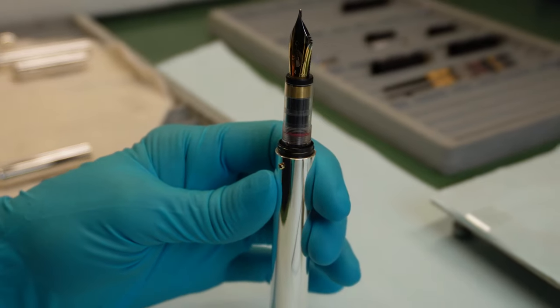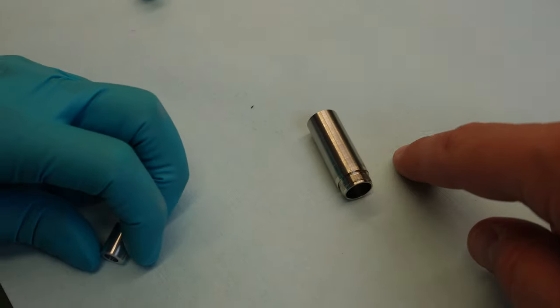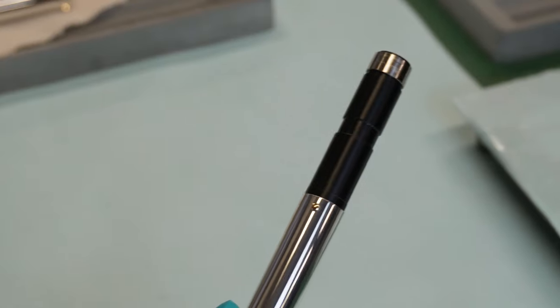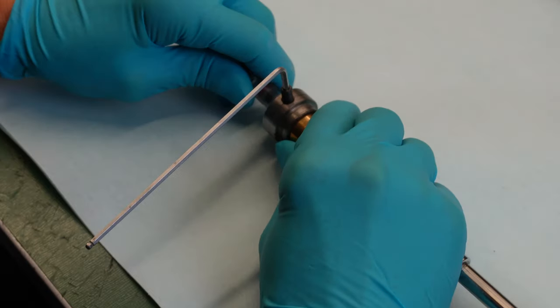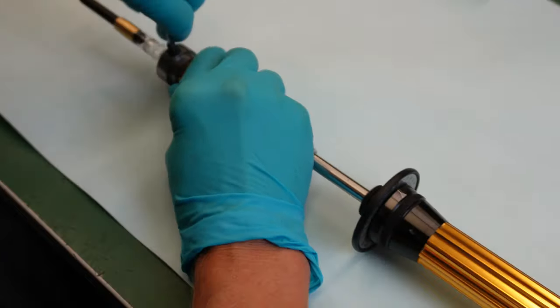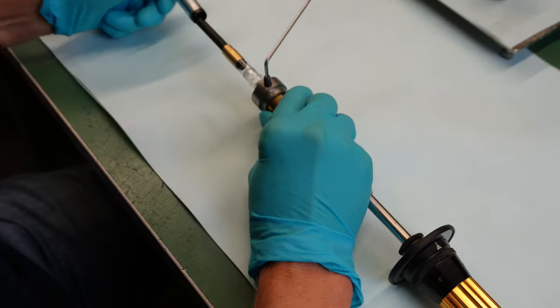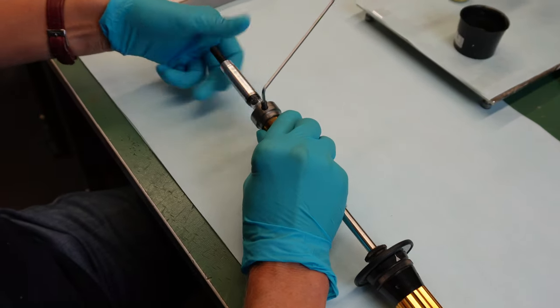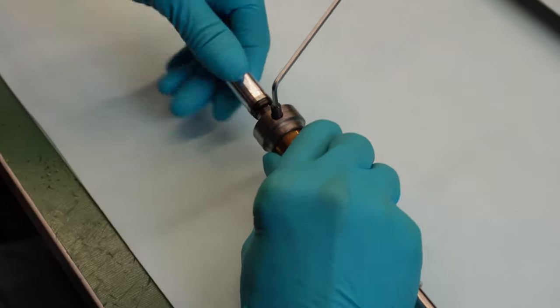First thing, the body yellow gold, this part here. She's gonna show us that. So first thing, the nib is being put in this kind of special machine they have developed. We see that the first part is being mounted.